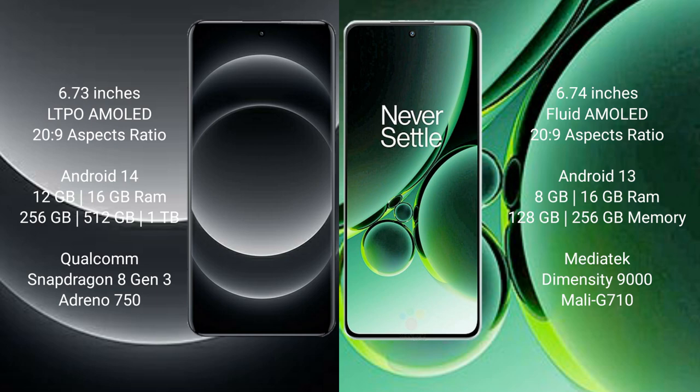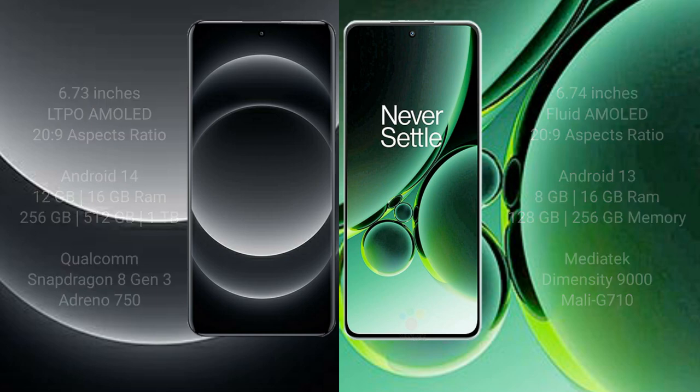Xiaomi 14 Ultra comes with 12GB and 16GB RAM options, with 256GB, 512GB, and 1TB internal storage. It features the Qualcomm Snapdragon 823 processor and GPU Adreno 750. OnePlus Nord 3 comes with 8GB and 16GB RAM, with 128GB and 256GB internal storage, featuring the MediaTek Dimensity 9000 processor and GPU Mali-G710.